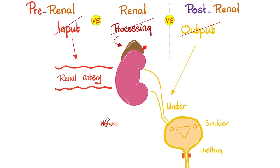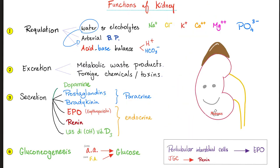If the problem started in the kidney itself, it's called intrarenal azotemia. But if the problem started after the kidney — i.e., in the ureter, bladder, urethra, etc. — it's called post-renal kidney injury.